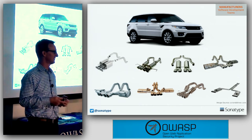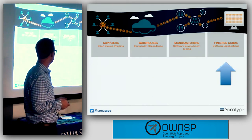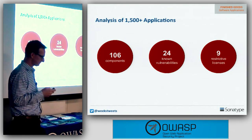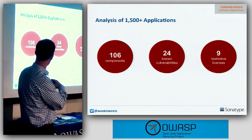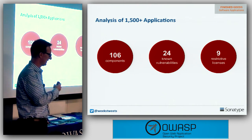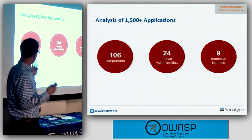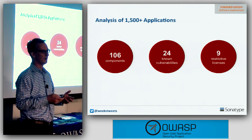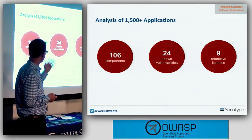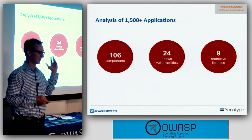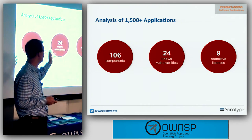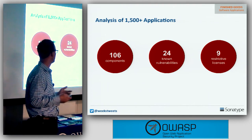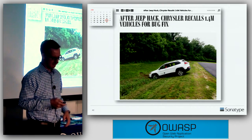When we assess applications, on average there are about 100 components per application and 23% of those components are known vulnerable. Veracode did a similar analysis across 5,000 applications and found about the same number — around 24 to 25 known vulnerabilities per application.